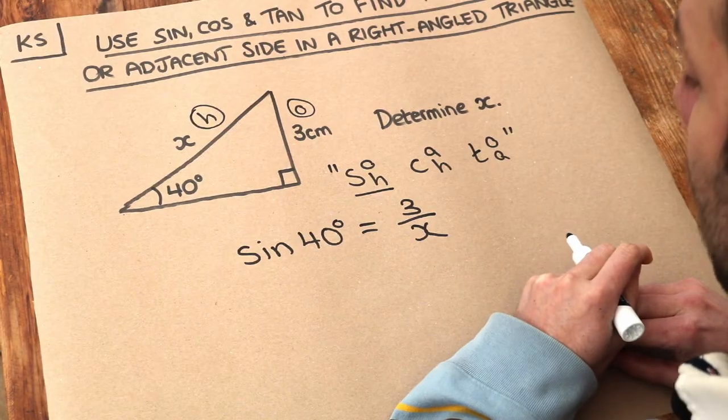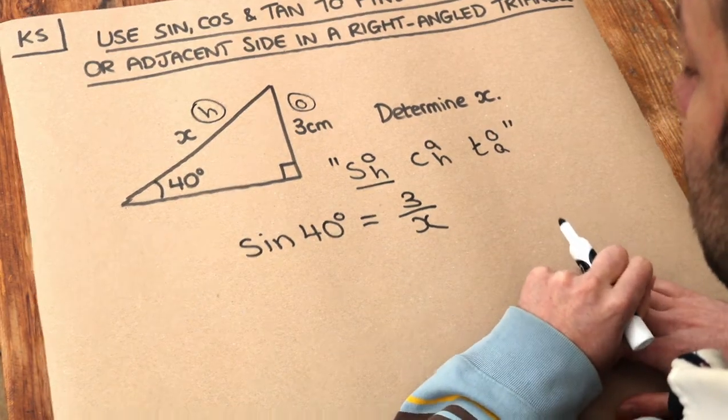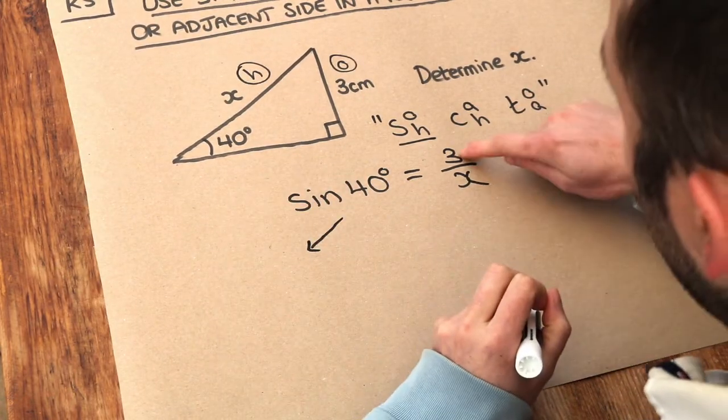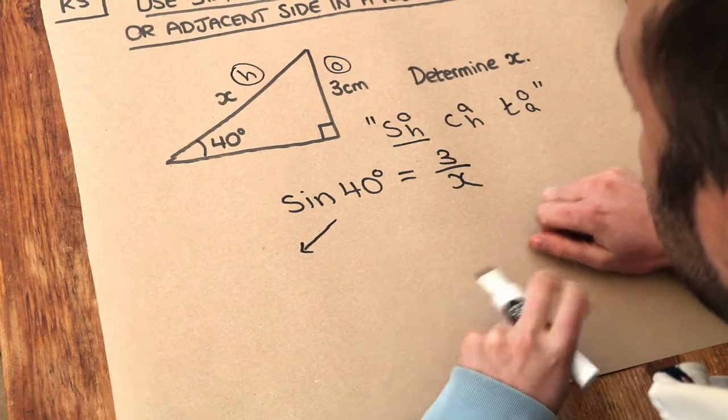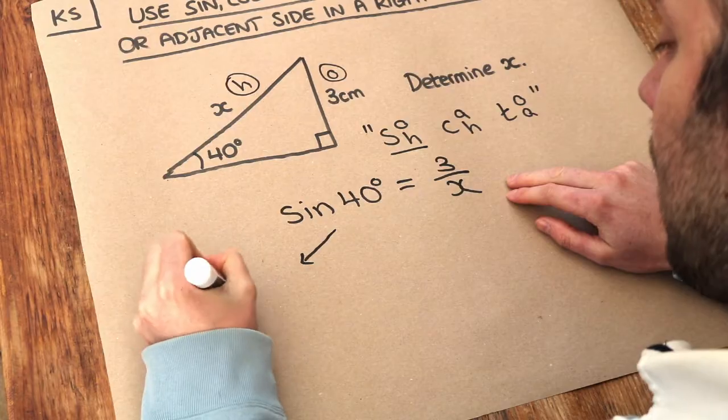So we've now got our equation, and then we just need to solve for x, so we need to get x on its own on one side of the equation. Now there's two ways of doing this, if you want to do it the slow way, you could think, well the 3's being divided by x, now to get rid of that over x, because we don't like fractions, we can multiply both sides by x.